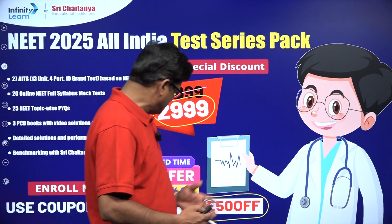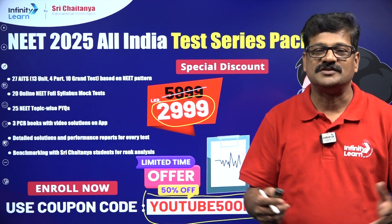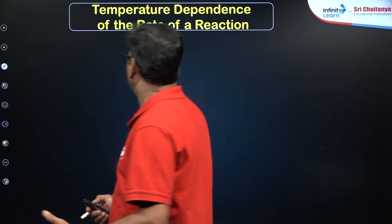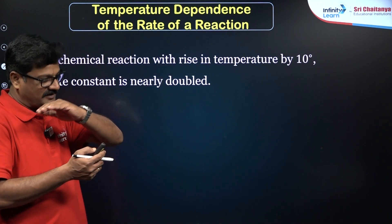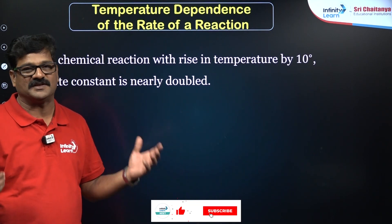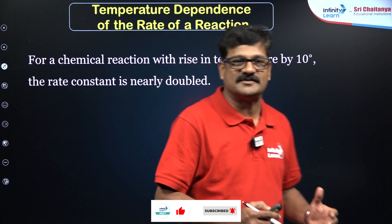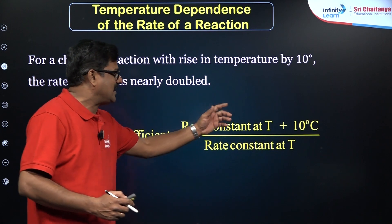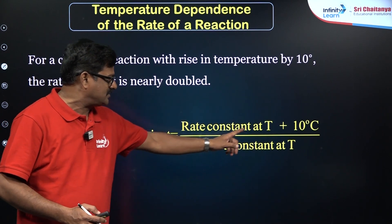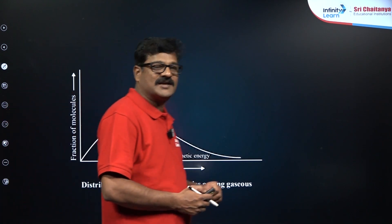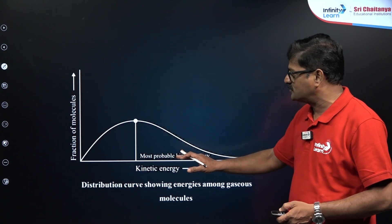Let us go with the temperature dependence on the rate of reaction using the Arrhenius equation. For a chemical reaction, for every 10-degree rise in temperature, the reaction rate almost doubles or triples — in most cases it is doubled. This is based on the temperature quotient, which is the rate constant at T+10°C divided by the rate constant at T. In most cases, this value is 2 or 3.